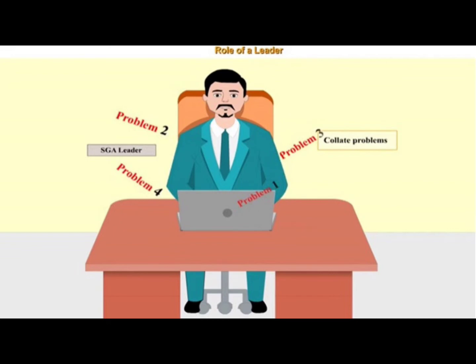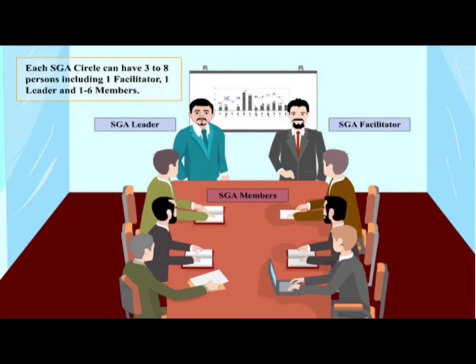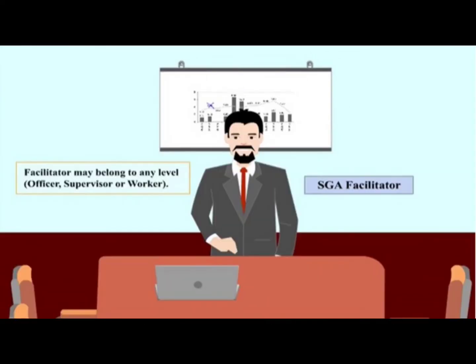Criteria for formation of SGA circles: circles working on machines should be TPM circles, while circles not directly working on machines can be quality circles. Each SGA circle can have 3 to 8 persons, including 1 facilitator, 1 leader, and 1 to 6 members. Circles should be cross-functional. The facilitator may belong to any level — officer, supervisor, or worker.